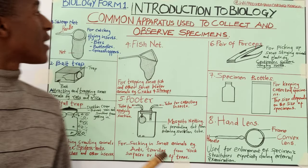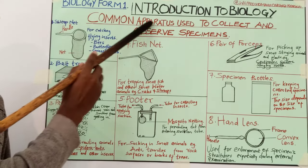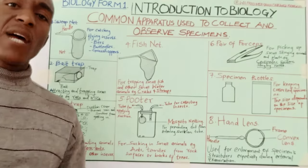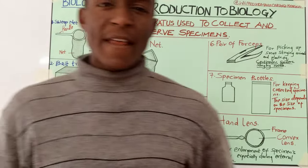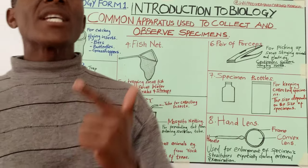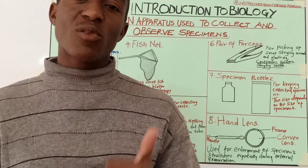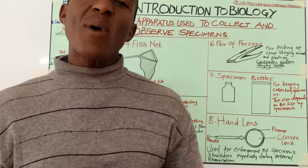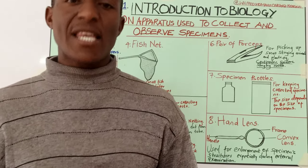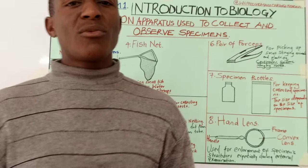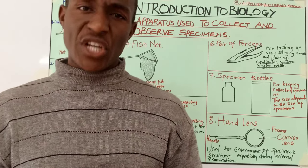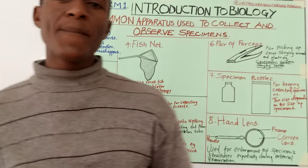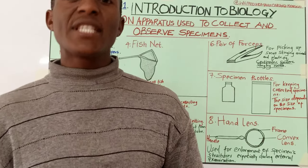It is about common apparatus used in collection and observation of specimens. In our previous lessons we said that apparatus used in collection, handling and observation of specimens are very important because they make our work in examining these specimens easy. I told you to go and check, look at the diagrams, some of which I have covered today, and familiarize yourself with these apparatus.